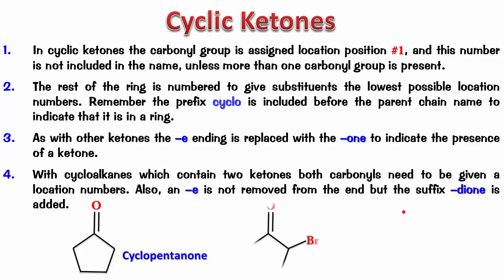For the next example, pause, write the name, and play it back. This is the carbonyl carbon, so it automatically gets position one. I'm going to make sure the substituent gets two because it should have the lowest number, so numbering goes 1, 2, 3, 4, 5. The prefix is 2-bromo and the parent is cyclopentanone — no need to mention position 1.